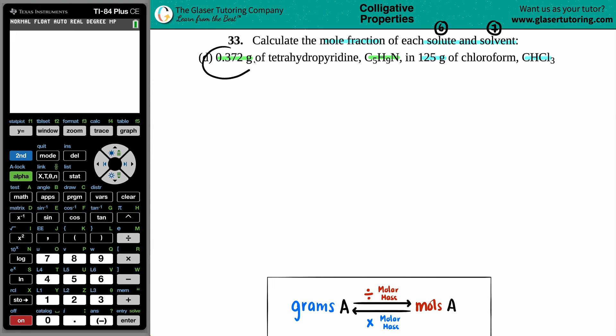In this case, we have 0.372 grams of the tetrahydropyridine, which is being put into the chloroform, which is CHCl3. By this wording and looking at the numbers, the C5H9N is the solute and the CHCl3 is the solvent. But for this question, we just have to find the mole fraction for both of them.